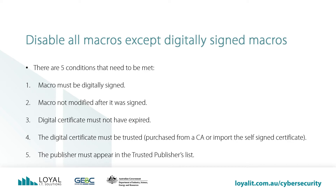Macro must be digitally signed. 2. Macro not modified after it was signed. 3. Digital Certificate must not have expired. 4. The Digital Certificate must be trusted — either purchased from a certificate authority, or import the self-signed certificate. 5. The Publisher must appear in the Trusted Publishers List. There are two main points that must be conformed to, which is technically more difficult when you don't have a server: the macro must be signed by a Trusted Root Certificate, and the publisher must appear in a Trusted Publishers List.